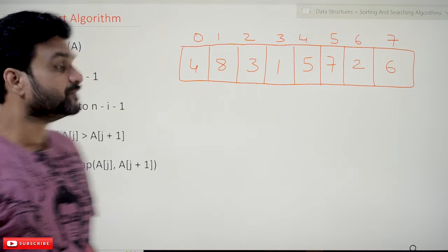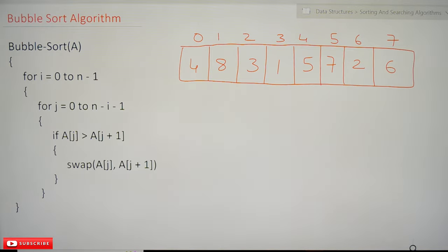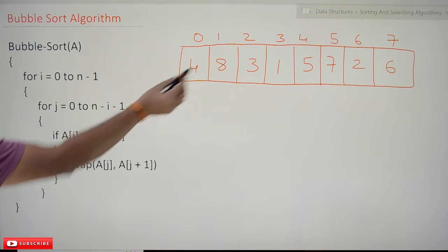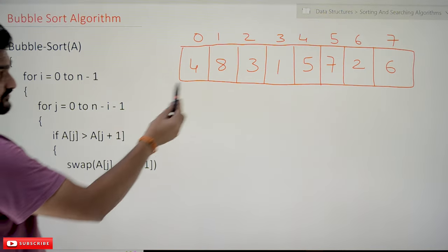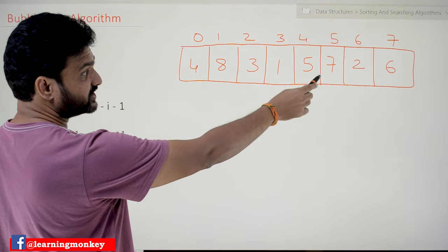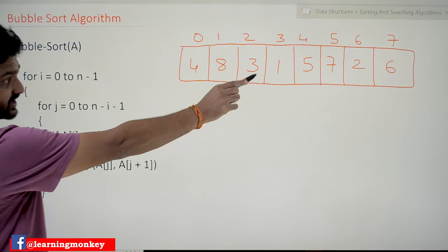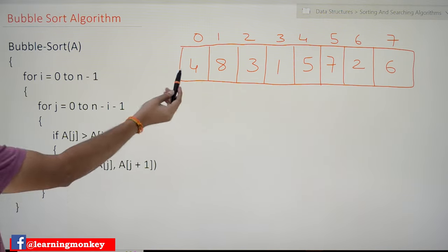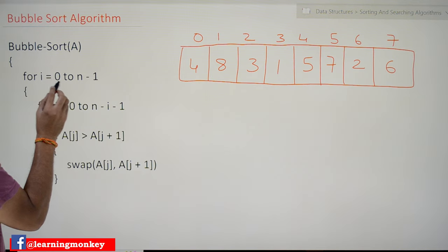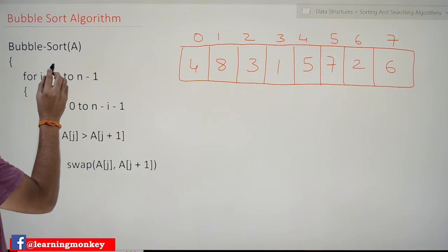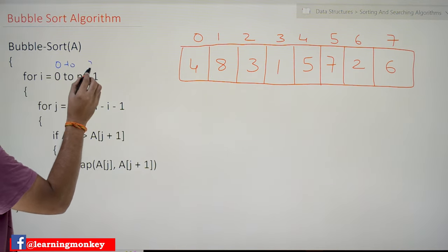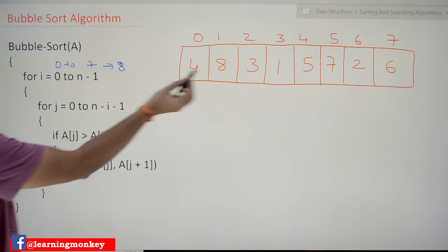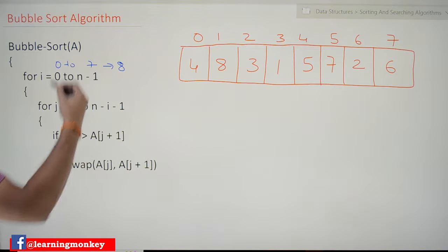Now coming to this class — this is the bubble sort algorithm. We'll try to understand each and every step in detail using this array. This is the same array covered in our previous video. The outer loop iterates from 0 to n minus 1, which is 0 to 7. Since the number of elements is 8, it is going to iterate 8 times.